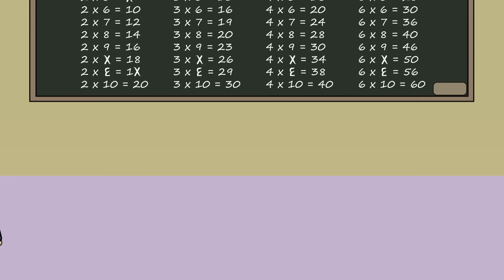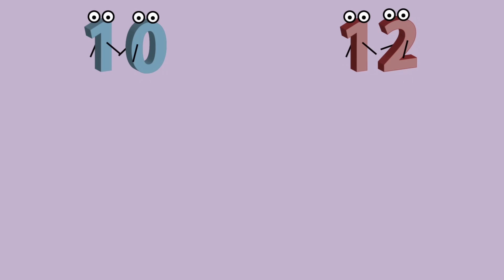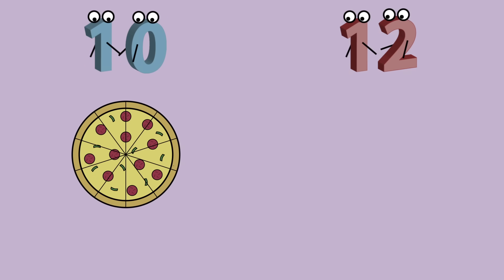However, the greatest advantage of base 12 is how it cleans up fractions. In base 10, dividing can be messy and untidy. For example, a third of 10 is 3.333, where the threes go on forever. A quarter of 10 is 2.5, which needs a decimal place.